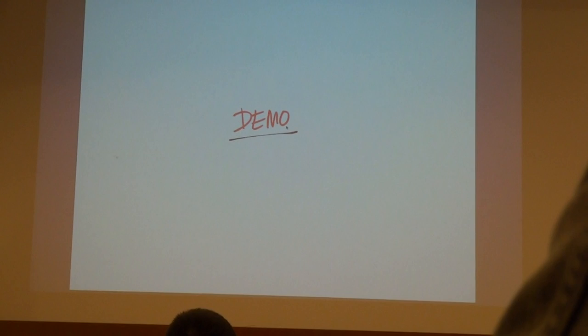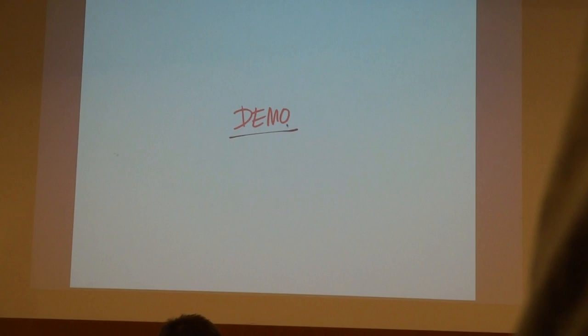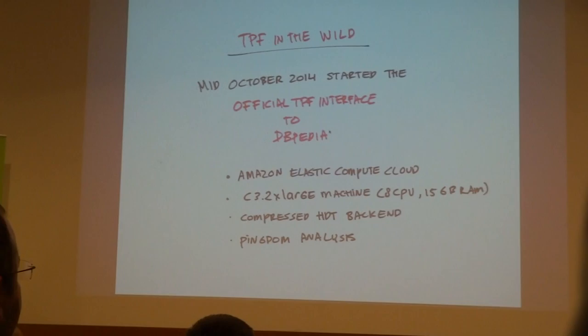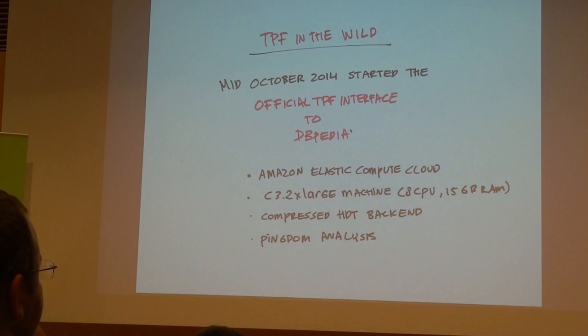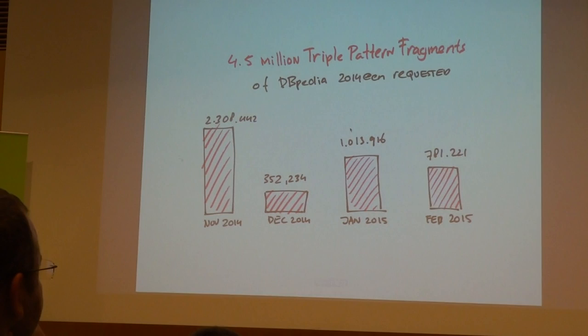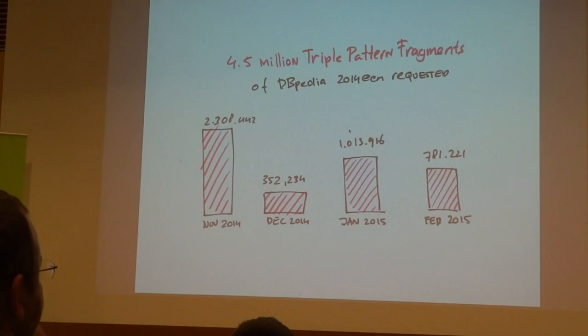The next part — you might be wondering: okay, Triple Pattern Fragments is cool, it works, I've seen this, but is it actually used? Well, it's interesting to know that TPF exists in the wild as well. Since October 2014, DBpedia has had an official Triple Pattern Fragments interface. So yes, it's used for the biggest dataset in the Linked Data Cloud. From the first four full months of DBpedia Triple Pattern Fragments, we've seen more than four million requests. So yes, people actually do use it.